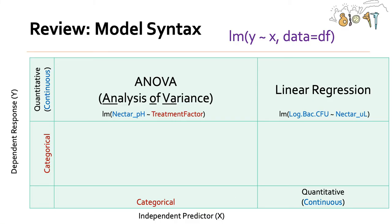So just to review: last week we talked about linear regression, and this week we're going to focus on ANOVA, which stands for analysis of variance. Both linear regression and ANOVA use the LM function in R. The syntax for the LM function is y tilde x, and then you define the data you're using. In linear regression we were comparing two continuous variables, but in ANOVA we compare a continuous variable as our dependent response to a categorical independent predictor.